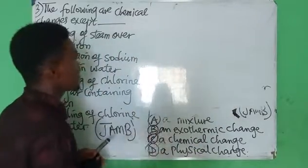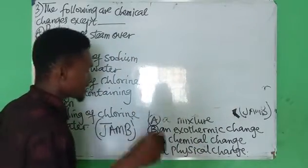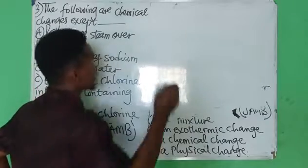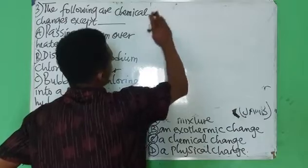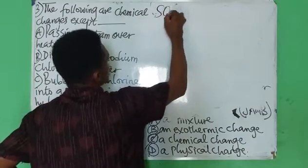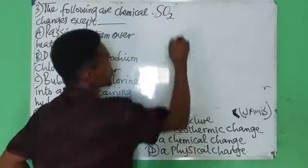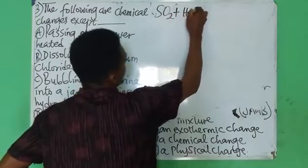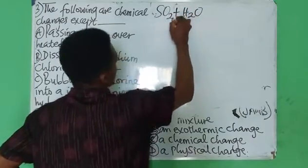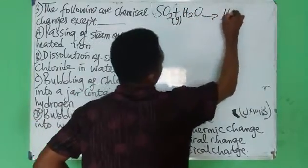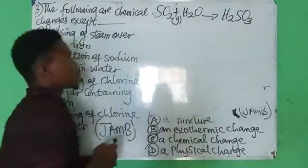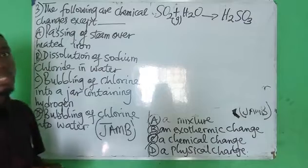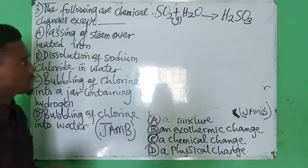Let me do the illustration. If sulfur oxide gas is passed through water, SO2 reacting with H2O—don't forget it is gas—will form H2SO3. This is a chemical change.